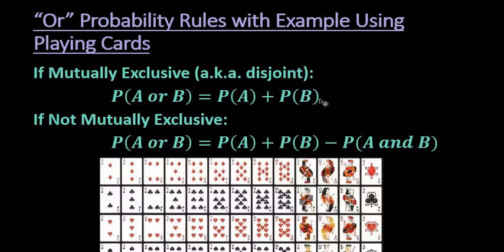In this video, I want to discuss the OR probability rules, and in order to demonstrate this, I'm going to do an example using playing cards. There are two OR probability rules. If it says the probability of A or B, where A and B represent any two events — such as the probability of selecting a 5 or a 6 — you are going to use one of these two rules. The first rule applies if the two events are mutually exclusive.